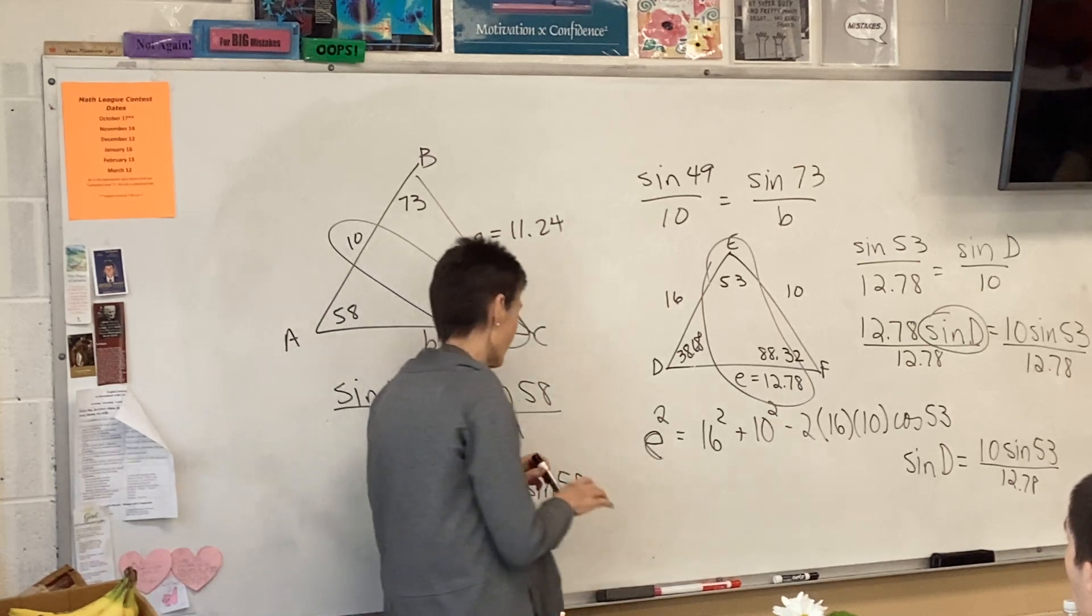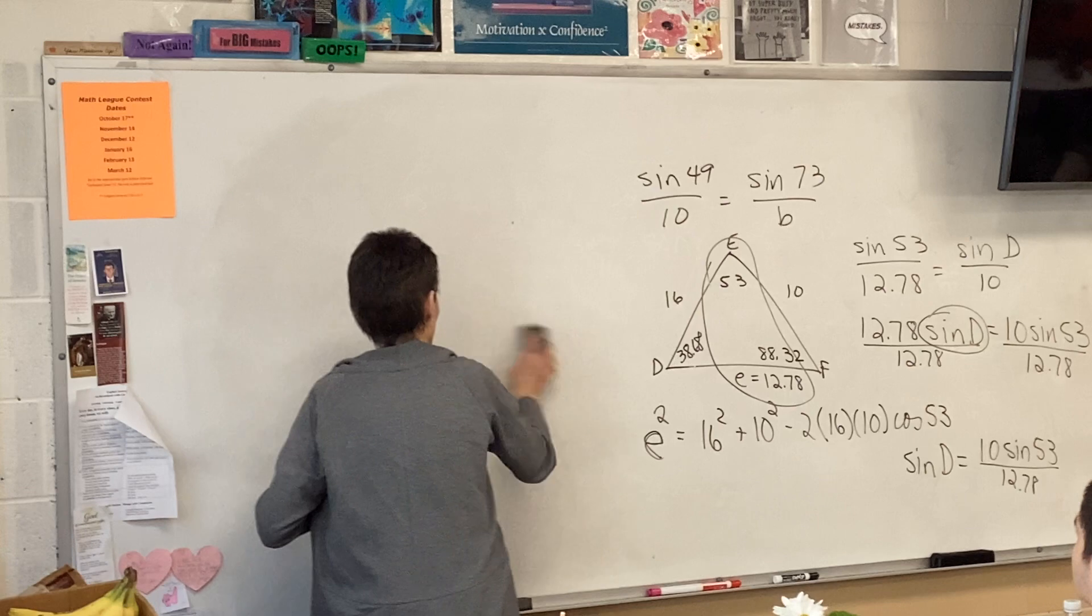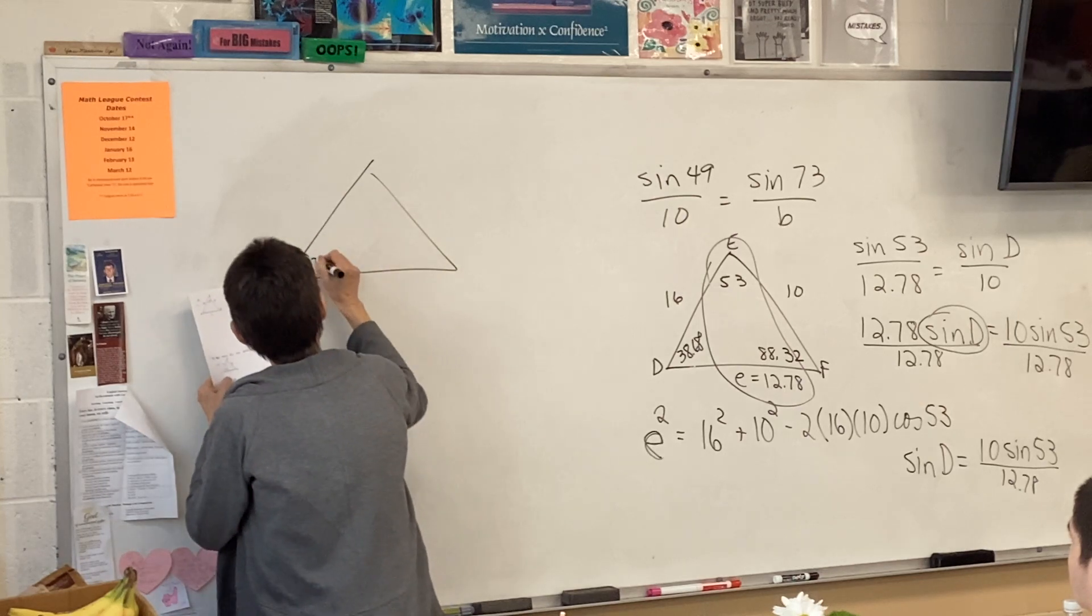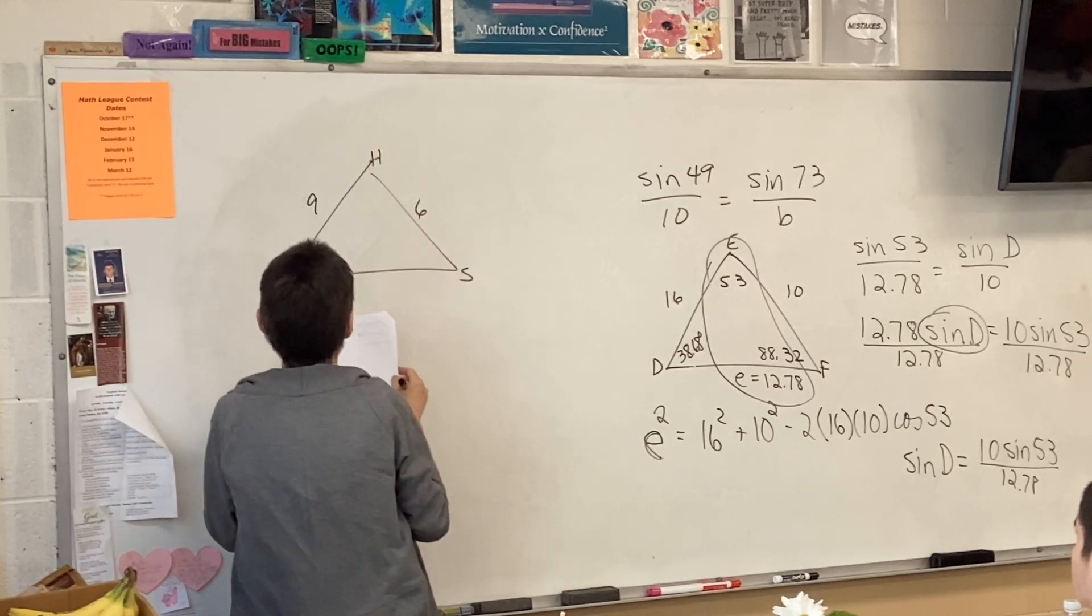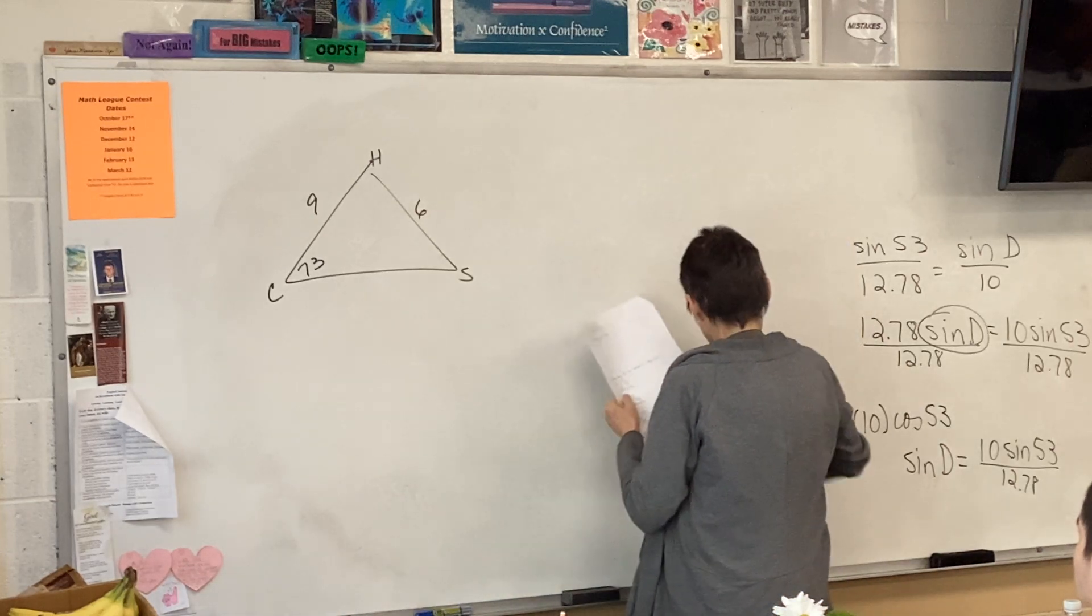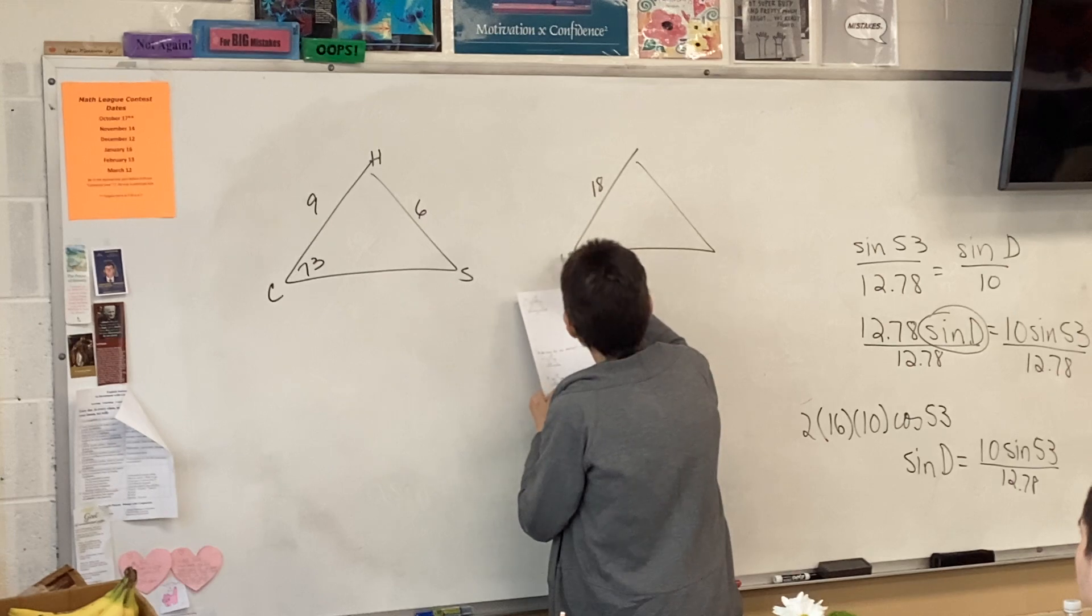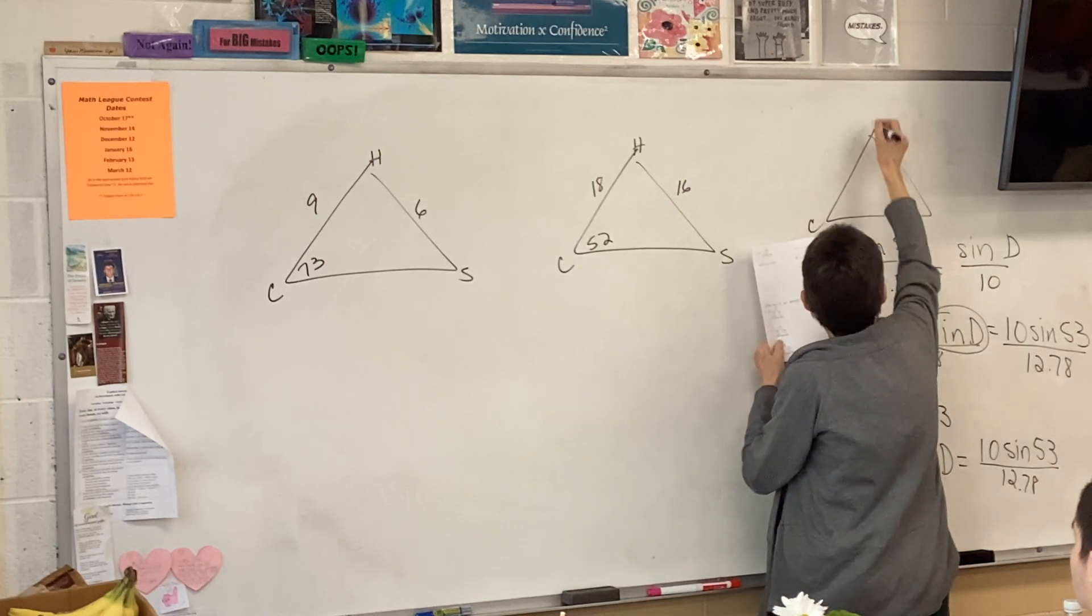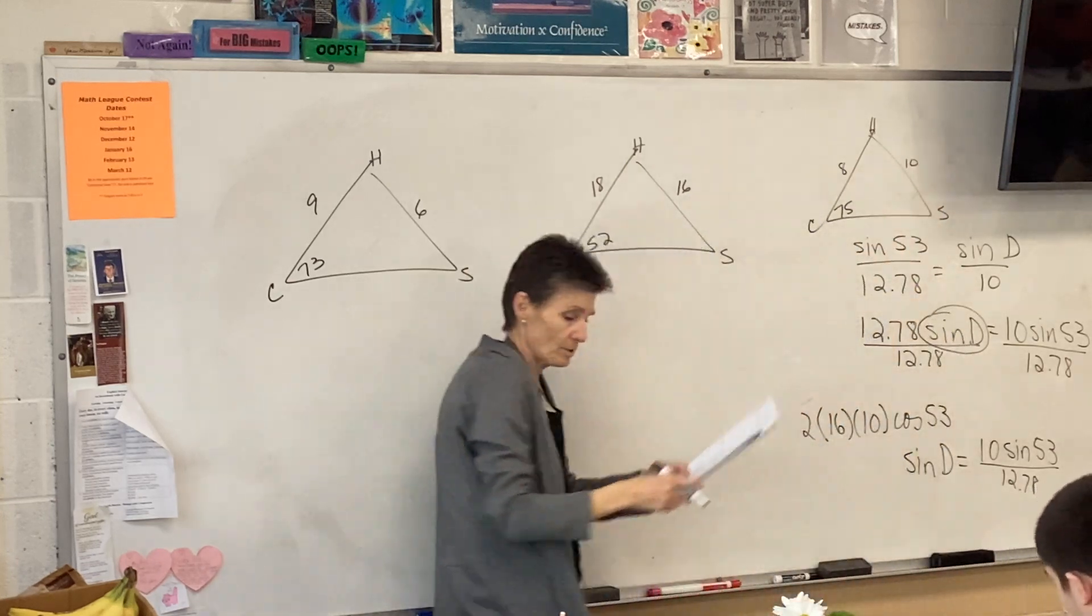All right. Now what? We're not done. Got a bunch more blanks to fill in. Where do we go from here? Now, can we use our law of sines? So sign 53 over 12.78 equal sign. I don't know, D over 10. So when I solve, my variable is sine D. When I solve, then I'm getting sine D. What do I have to type into my calculator? Second sine.